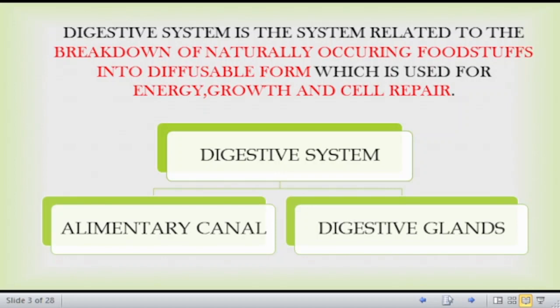The digestive system is divided into two parts: the alimentary canal and the digestive glands. The alimentary canal leads to the digestive glands. The digestive glands secrete enzymes so that they can extract out nutrients, and the waste material is excreted out by the digestive system.